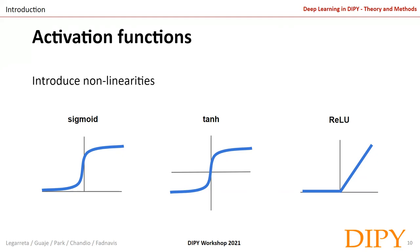The tanh squashes inputs to the minus-one/one range and is zero-centered, which is nice, but still kills gradients when saturated. ReLU does not saturate in the positive region, is computationally efficient, and converges much faster than sigmoid or tanh in practice. Other activation functions have been proposed and continue to be proposed for their particular properties.